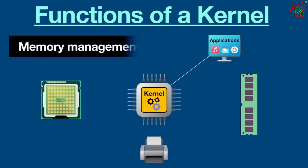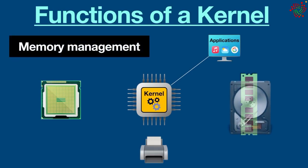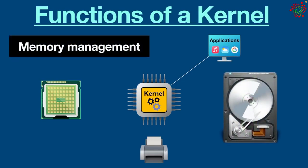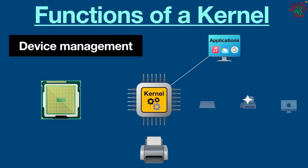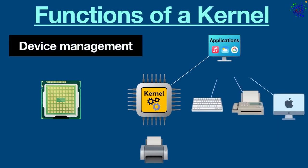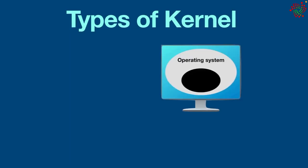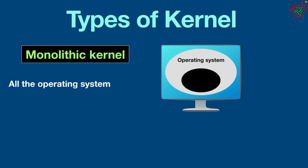Third, memory management: every process needs some memory space, so memory must be allocated and deallocated for its execution — all this memory management is done by the kernel. Finally, device management: peripheral devices connected to the system are managed and controlled by the kernel.